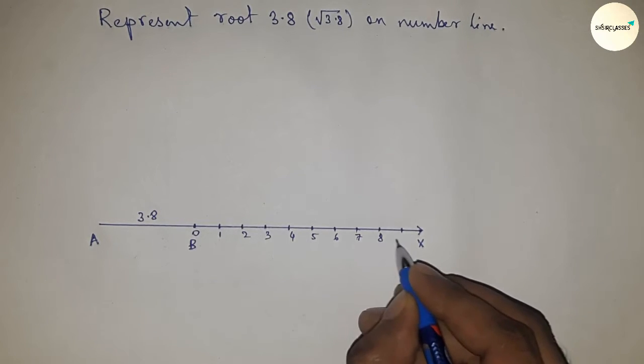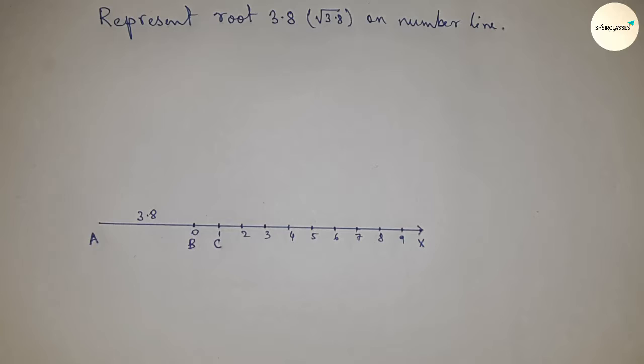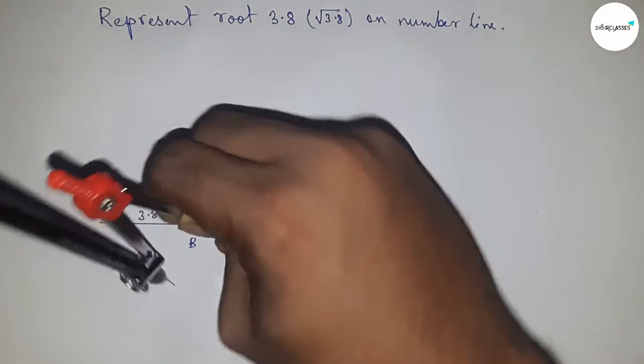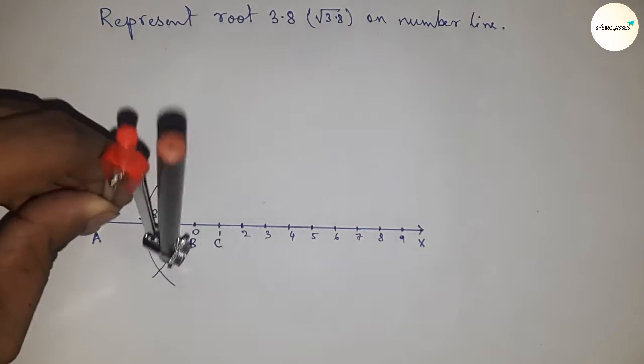Next, bisect the line AC. Take greater than half of AC and draw arcs. With the same length, place the compass here and cut the arcs in this way.